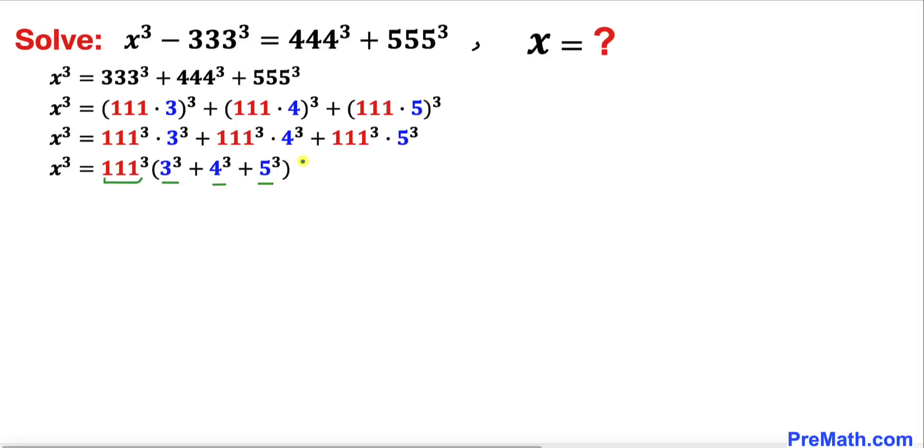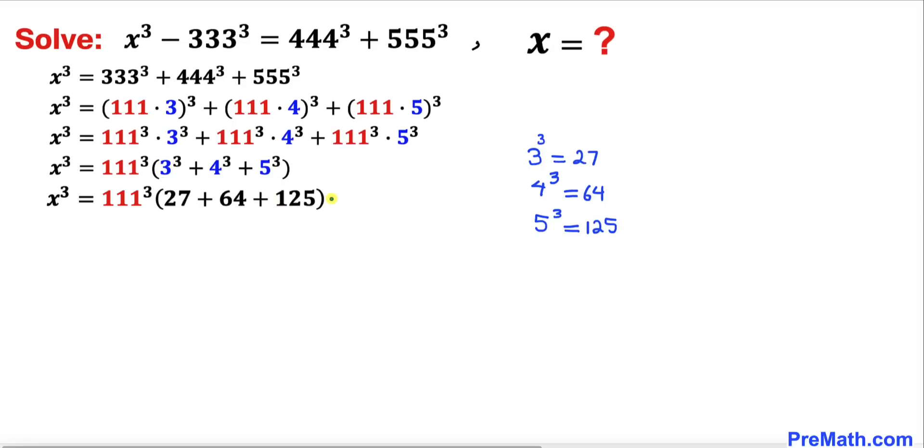Now we can write 3³ as 27, 4³ as 64, and 5³ as 125, as you can see in this next step.